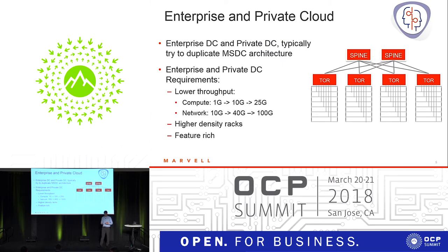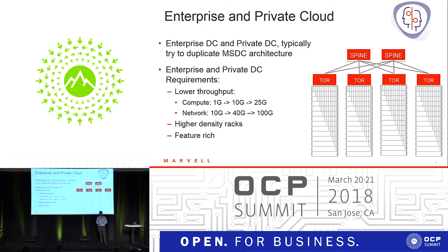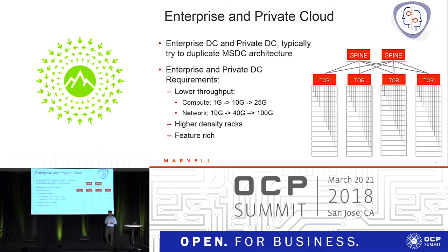Enterprise and private cloud are actually duplicating what the Megascale data center does — taking the same equipment and reusing it. However, as Megascale requirements go up, private cloud is not moving as fast, so they require lower throughput. Today 1G servers are widely spread, with 10G in the future and 25G further out. On the networking side, they're at 10G and 40G going to 100G next generation. They also require higher-density racks — 96 or 144 servers in one rack. Their feature requirements are much larger: they need different tunneling schemes, more security, all of which impacts switch requirements.